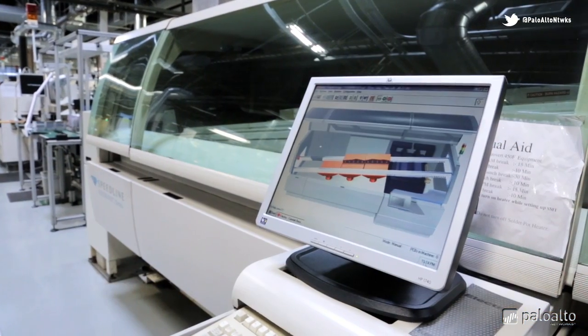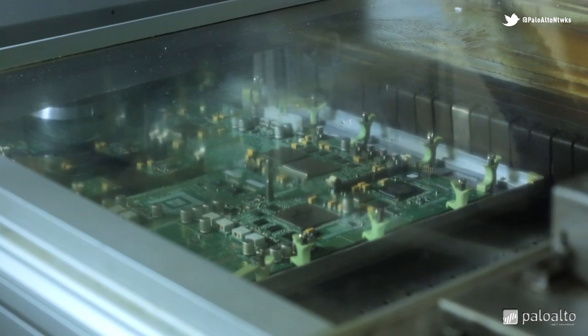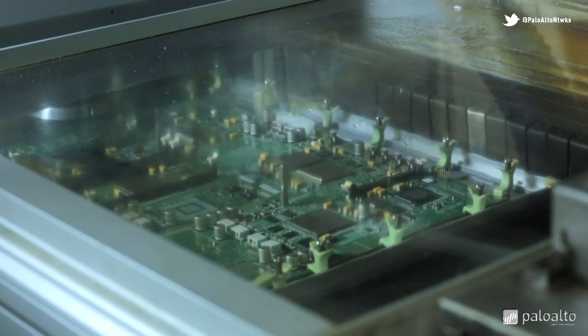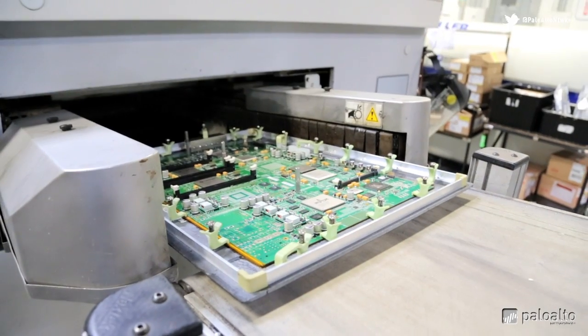Next, the boards are placed on a conveyor belt and run through the wave soldering machine. Inside the machine, all the pins on the bottom of the board are soldered together.